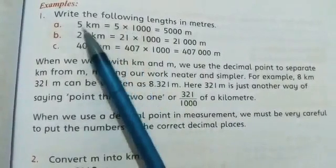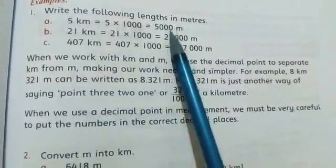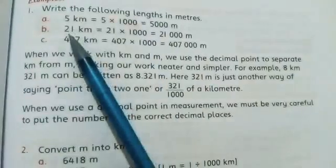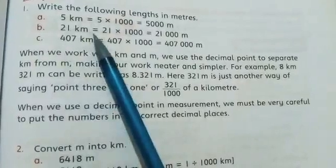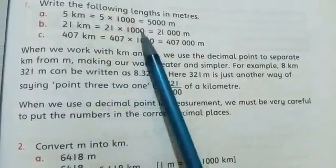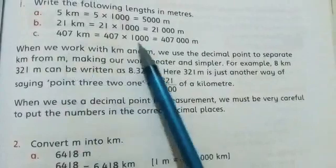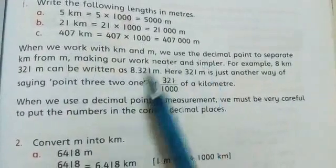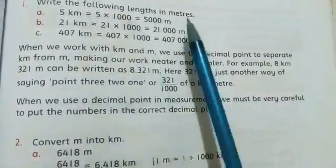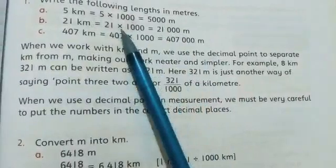If you remember, then what do we do? Five kilometers, multiply by thousand, then the answer will come. Similarly, if we want to find out how many meters in 21 kilometers, multiply it by thousand. See the answer - when we go to smaller unit, then multiply it.